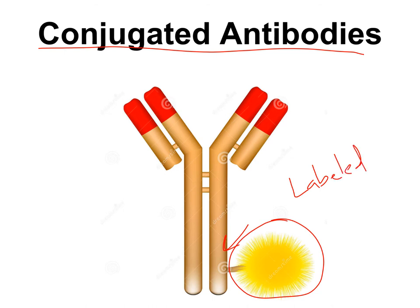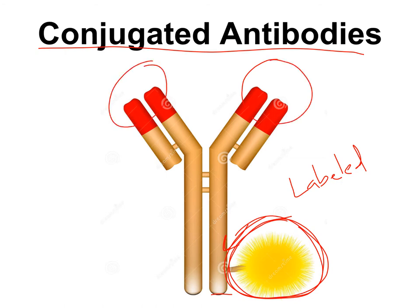This molecule added to the constant region of the heavy chain allows you to identify the presence of the antibody. The label is added to the constant region of the heavy chain because you would not want it added to the variable region of the heavy and light chain, which makes up the antigen binding site. You still need the antigen binding site to be able to bind to the antigen.